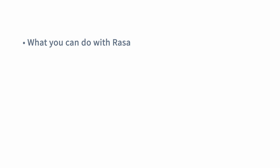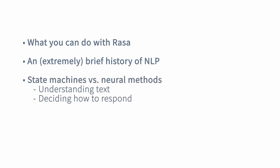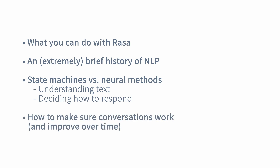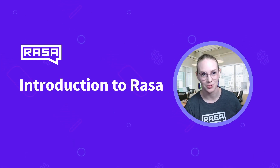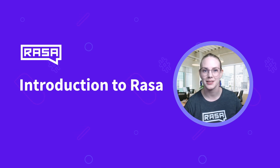So this has been a very brief, high-level overview of Raza, which is a machine learning and rule-based framework to help you build chatbots specifically for task-oriented dialogue systems. We've talked about the history of NLP and situating Raza within it, state machines versus neural networks for both understanding text and deciding how to respond, and how to make sure conversations work and improve over time. I hope you're excited and ready to start building your first Raza project — I look forward to seeing what you build.